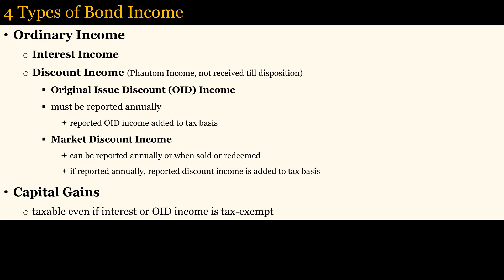There are four types of taxable bond income. Most bonds pay interest periodically, usually twice annually, and it is taxed as ordinary income. When bonds are purchased at a discount, then there will be a gain at maturity. However, this gain is treated like interest, as ordinary taxable income. Unlike stocks, it is not treated as a capital gain. However, the reported discount income is added to your tax basis, which reduces capital gains or increases capital losses. Capital gain or loss can only be determined after accounting for discount interest.